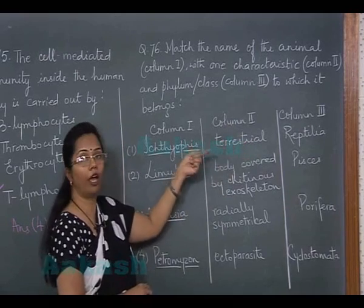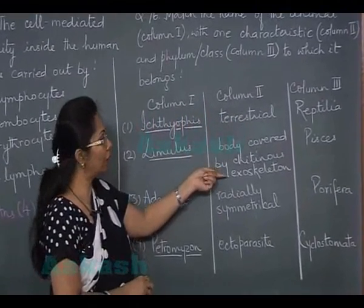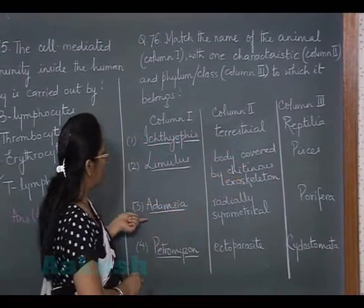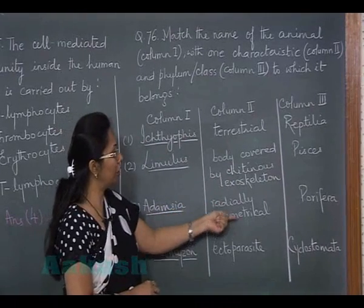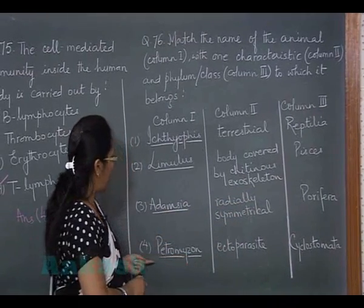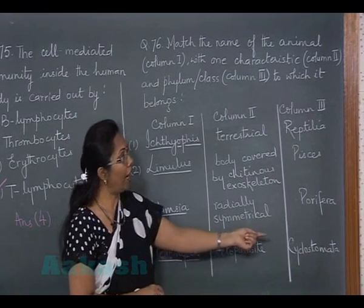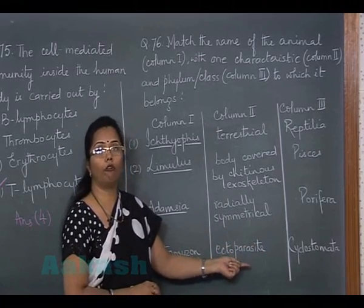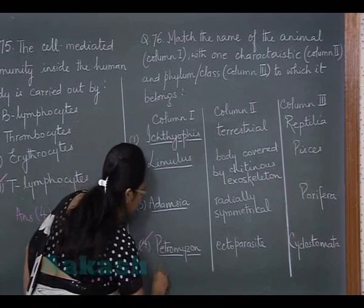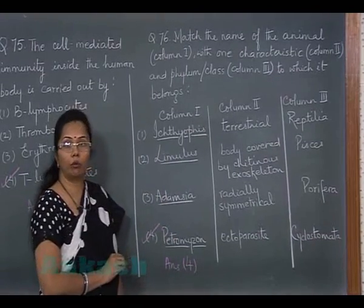Option 2 — Limulus body covered with chitinous exoskeleton is correct, but Pisces is wrong; it belongs to phylum Arthropoda. Option 3 — Adamsia is radially symmetrical (correct), but it is not in Porifera; it is a cnidarian. Option 4 — Petromyzon is an ectoparasite on other fish and belongs to class Cyclostomata of Vertebrata — this is correct. So the answer for question 76 is option 4.